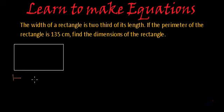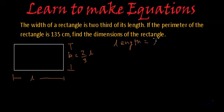So if we say that this longer side is length and if we assume it as L, the shorter side will be breadth. And they are saying the width or the breadth is two-third of its length. So they are saying B is 2 by 3 of L. If length we assume as L, width will be 2 by 3 of L.